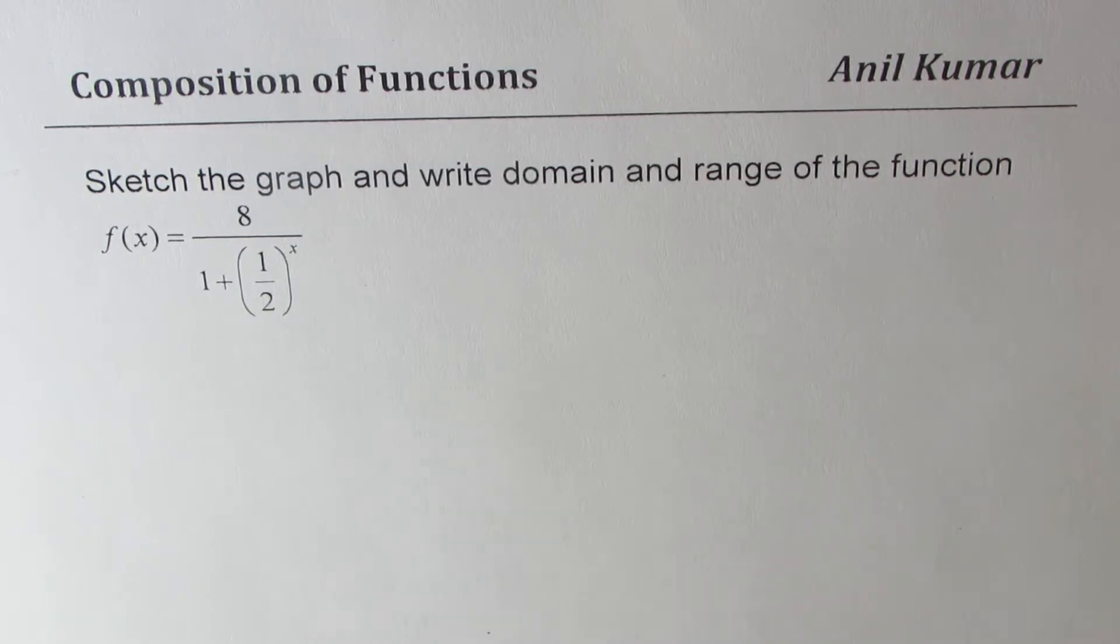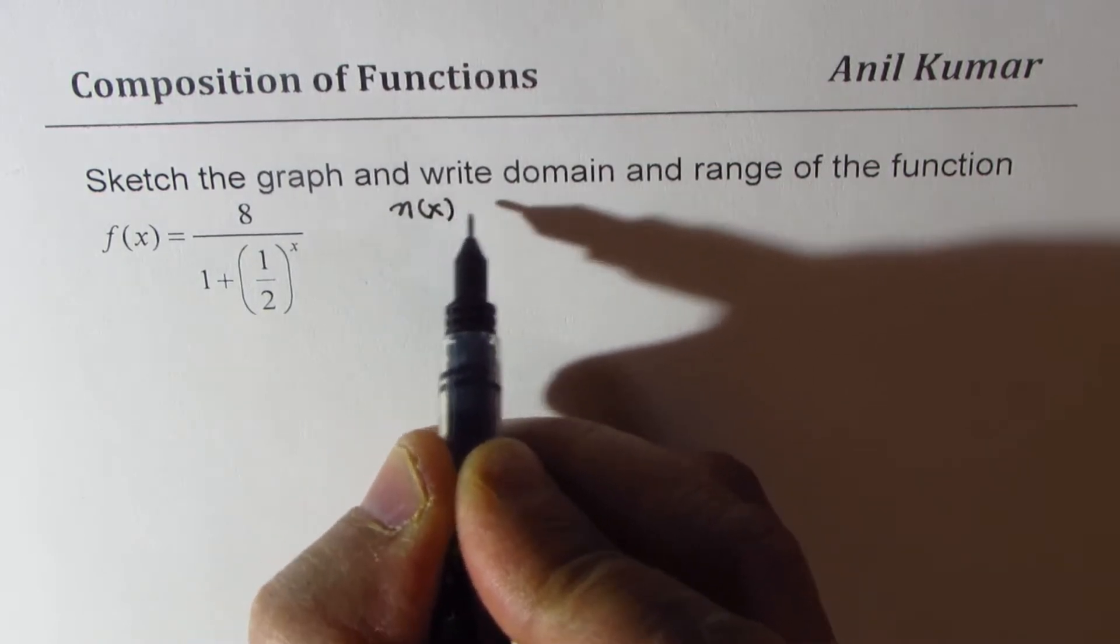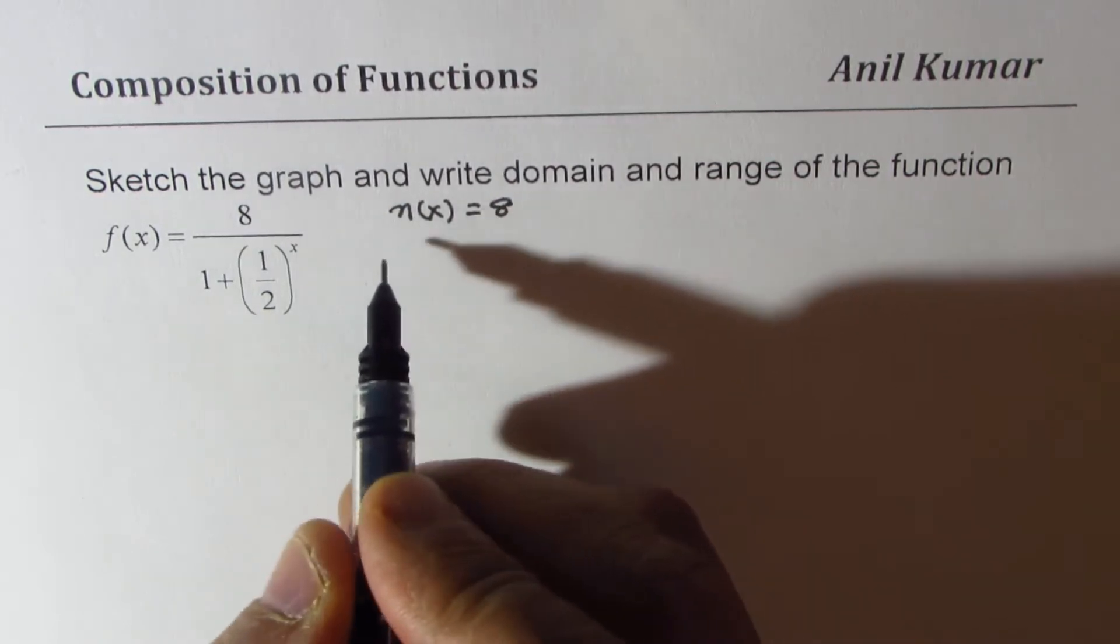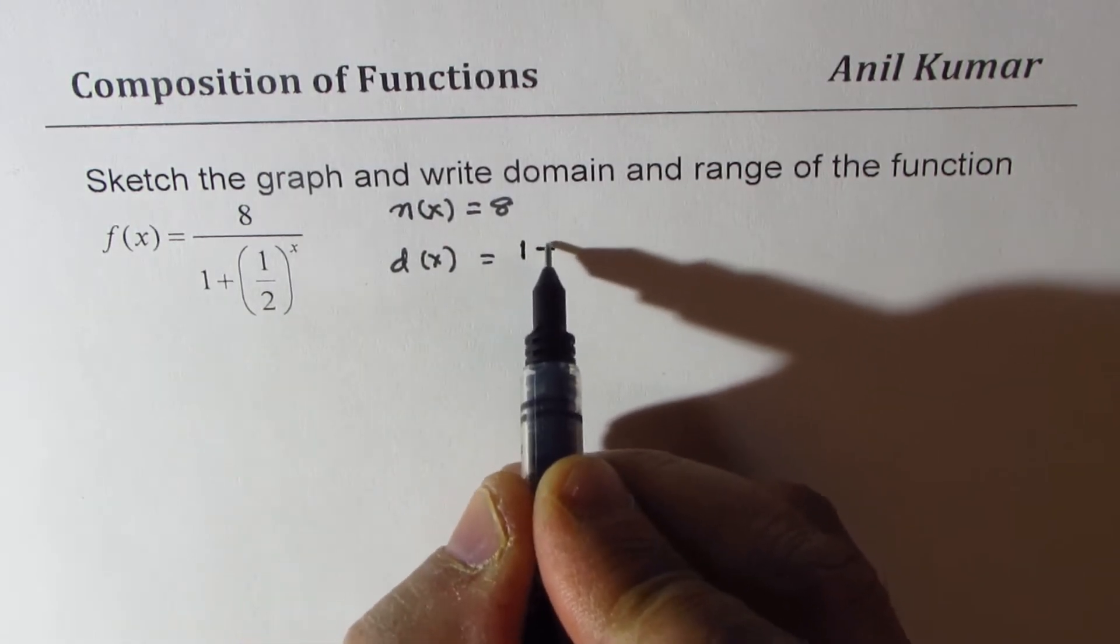Basically we have two types of functions here. Let's say numerator n(x) is given to us as 8, and the denominator d(x) is given to us as a function 1 plus half to the power of x.